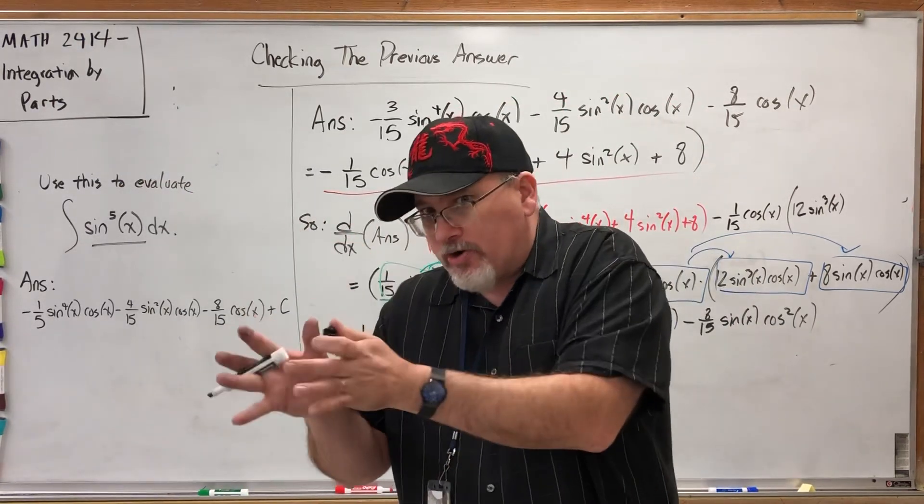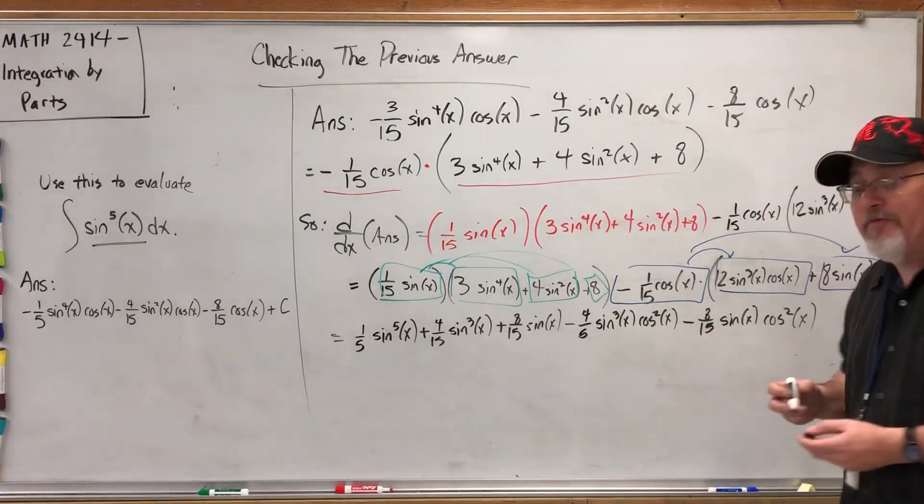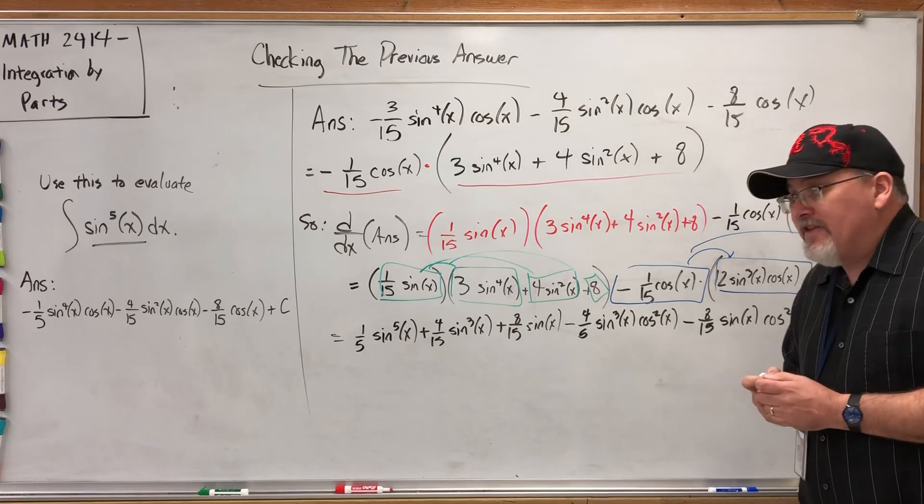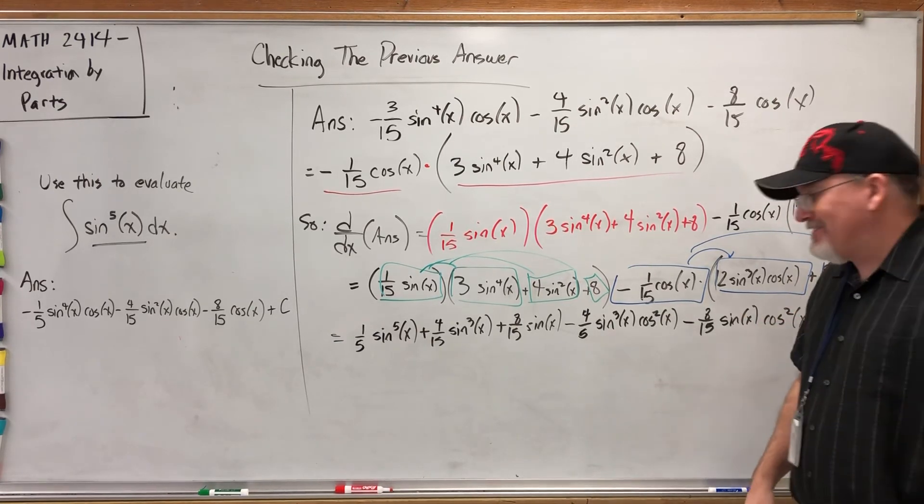So as a problem-solving strategy, you identify what is preventing you from where you currently are to where you want to be. I'm currently here, I want to be there. The cosines are preventing me from being there. And then you ask yourself, what can I do to overcome that? I don't want cosines, I want sines.